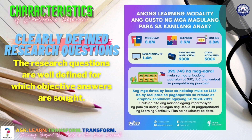In quantitative research, the researchers know in advance what they are looking for. The research questions are well-defined, for which objective answers are sought. All aspects of the study are carefully designed before data are gathered. For example, to determine the learning modality preferred by students, the Department of Education conducted a survey about it.